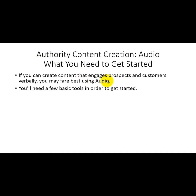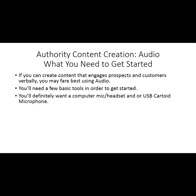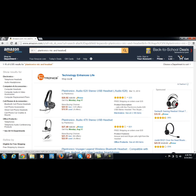You are going to need a few basic tools to get started using audio. You'll definitely want a computer mic and headset and/or a USB cardioid microphone. These items do not have to be super expensive. If you do a simple search on Amazon, you'll notice the Plantronics Audio 628, a general headset that is just fine for creating audio on your personal computer.